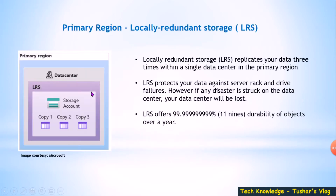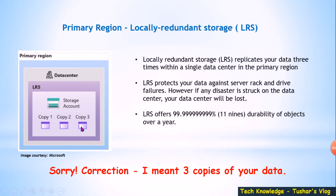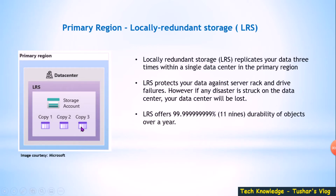The first one under primary region is Locally Redundant Storage (LRS). In the case of LRS, your data is written in one data center and there will be three copies of your data. The benefit is your data will be protected against any rack failure or drive failures. However, the drawback is if a disaster strikes — a cooling failure or some reason your complete data center is down — all your data will not be available. This is the lowest level of redundancy option.